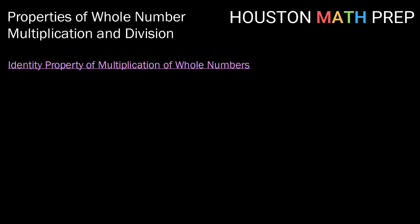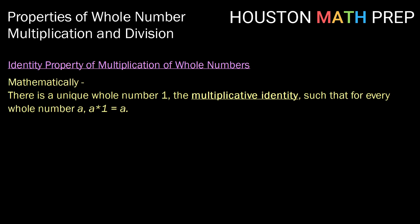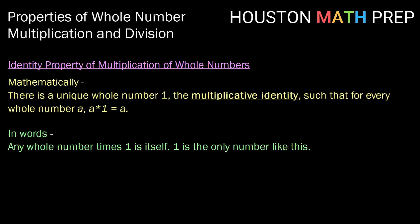Finally, our identity property of multiplication of whole numbers says there is a unique whole number one, called the multiplicative identity, such that for every whole number a, a times one is equal to one times a, which is equal to a. In words, we might say any whole number times one is itself, and one is the only number like this.